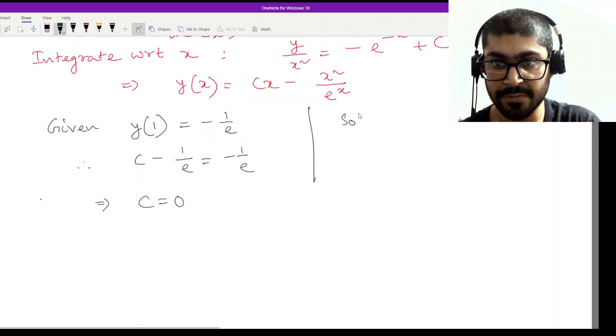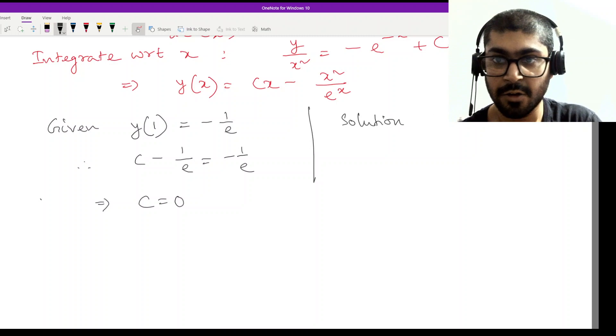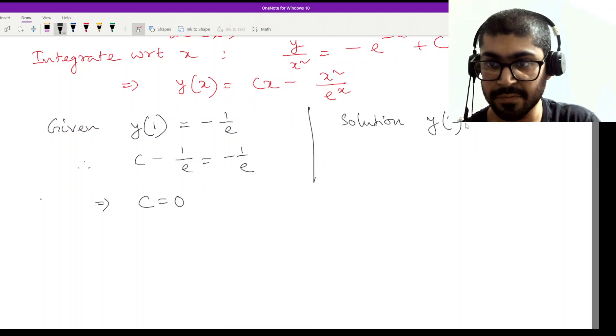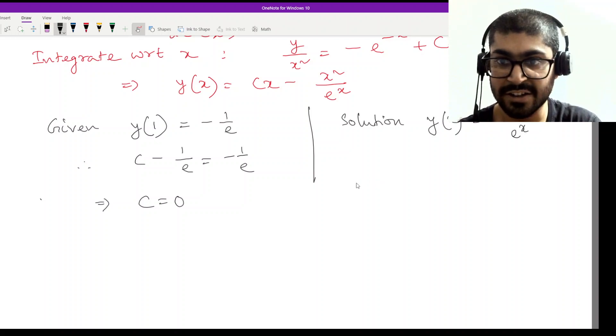Therefore, the solution will be now y(x) = -x²/e^x. Since c is 0, the cx part gets eliminated.